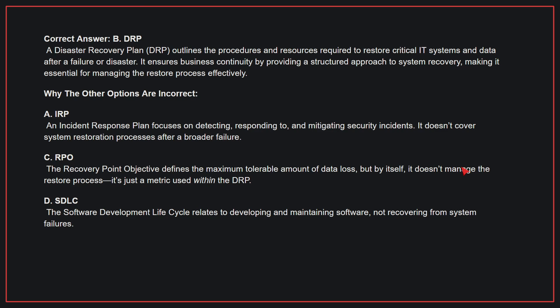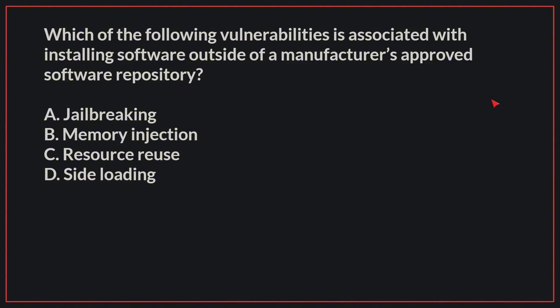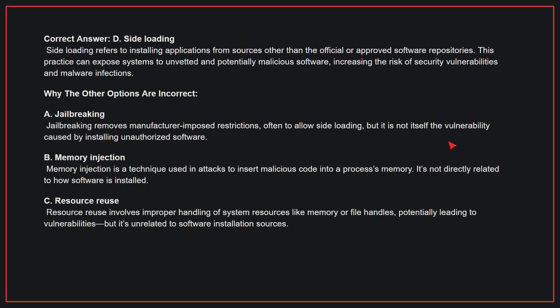Therefore, the correct answer is B. Which of the following vulnerabilities is associated with installing software outside of a manufacturer's approved software repository? The correct answer is D: Sideloading. Sideloading refers to installing applications from sources other than the official or approved software repositories. This practice can expose systems to unvetted and potentially malicious software, increasing the risk of security vulnerabilities and malware infections.